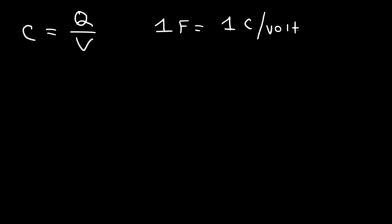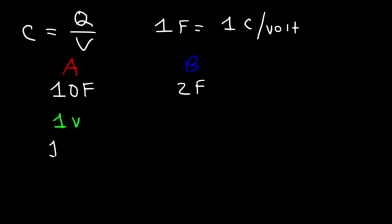Let's say if we have two capacitors. One has a capacitance of 10 farads and the other one has a capacitance of 2 farads. Let's call the first one capacitor A and the second one capacitor B. Now if we charge up capacitor A to a voltage of 1 volt, it can store 10 coulombs of charge. For capacitor B, if we charge it up to 1 volt, it can only store 2 coulombs of charge.